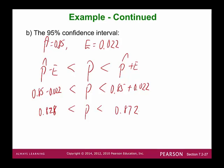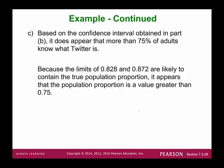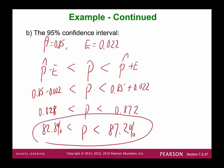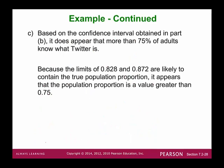The interpretation: based on this confidence interval, it does appear that more than 75% of adults know what Twitter is, because both limits — 0.828 and 0.872 — are bigger than 0.75. The interval is likely to contain the true population proportion, and that number is definitely bigger than 0.75.